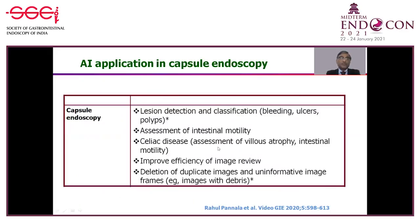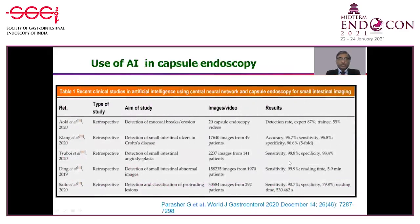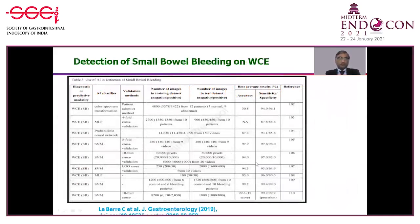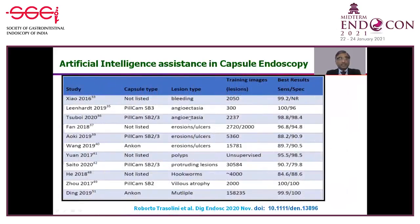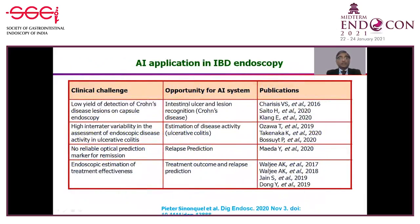AI has also found wide application in capsule endoscopy for detection of lesions, assessment of motility, improving image view, and assisting the endoscopist by deleting duplicate and uninformative images. Systems already available automatically detect lesions and blood with pretty good sensitivity and specificity. Detection of small bowel bleeding, angiodysplasia, villous atrophy for celiac disease, and multiple other lesions have all been studied with very good reliability.